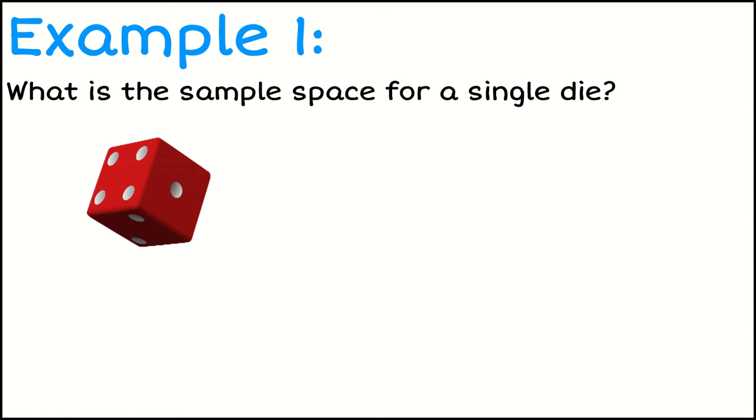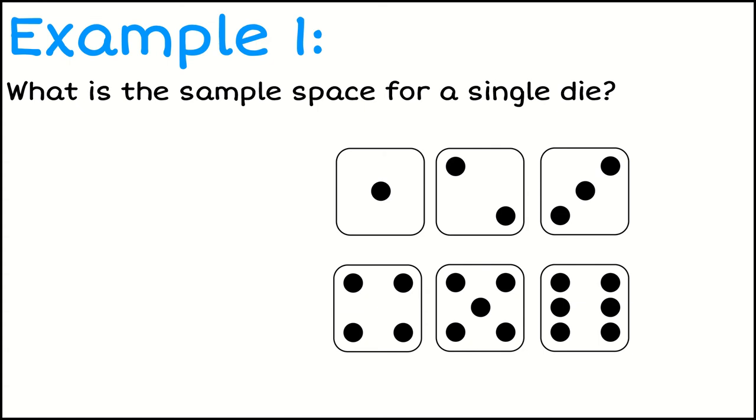So if I'm talking about a single dice, then think about the fact that each dice has six different faces on it. And so when we come to look at the sample space, we're looking at all of the possible outcomes. So when we roll a dice, here are our different possible outcomes.